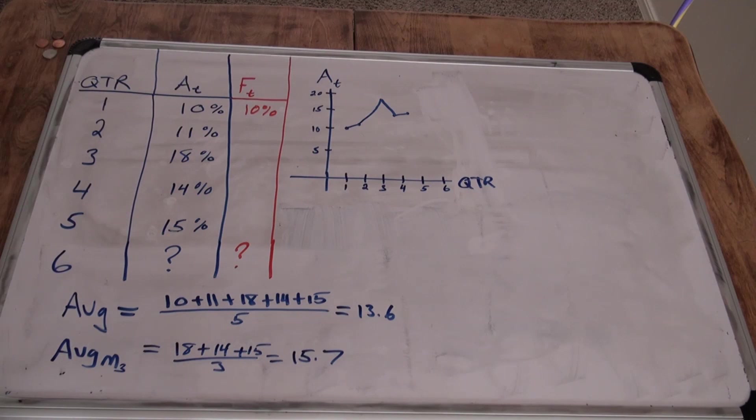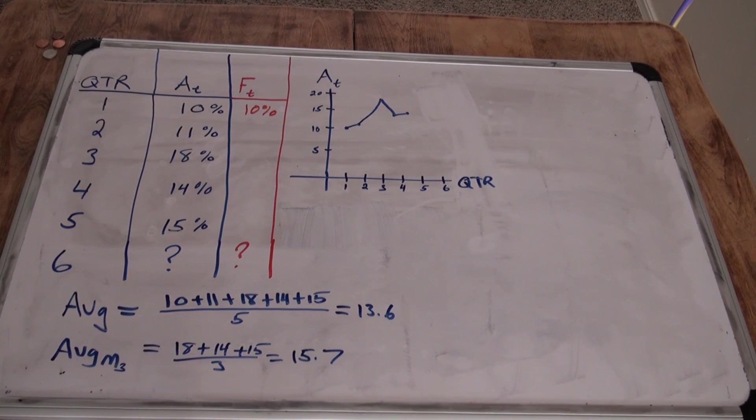Now there's one other forecast method that I want to bring up called exponential smoothing and there's various techniques for finding this out and different ways to do it. We're going to do a really crude, quick example. It's not very difficult. It is a little time consuming by hand.